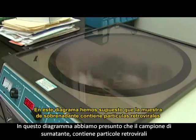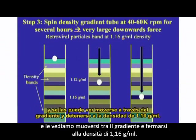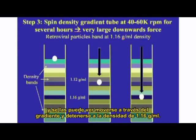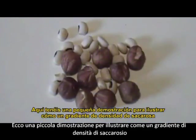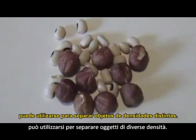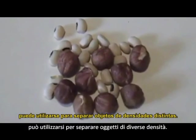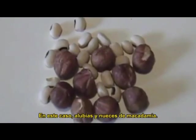In this diagram, we have assumed the supernatant sample contains retrovirus particles, and you can see them gradually moving through the gradient and being arrested at the 1.16 grams per ml density. Here is a short demonstration to illustrate how a sucrose density gradient solution can be used to separate objects of different densities — in this case beans and macadamia nuts.